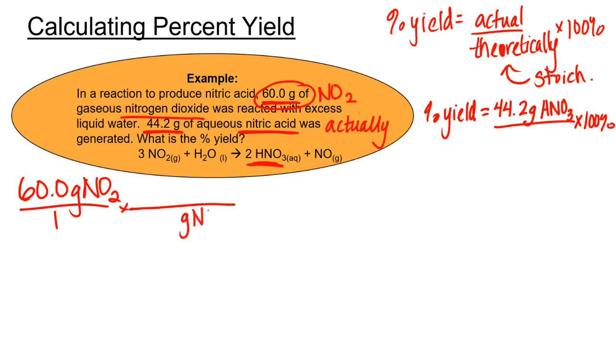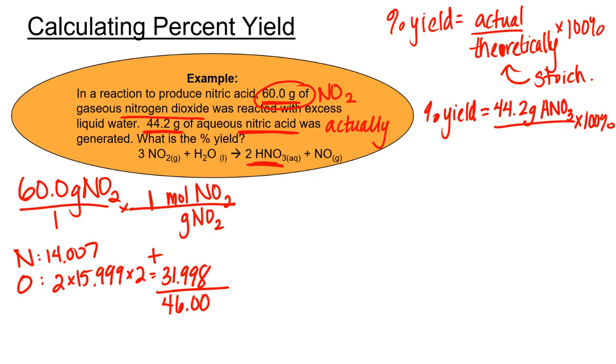We can bring down grams of nitrogen dioxide and first get to moles of NO₂. Now we'll need its molar mass. So we'll need nitrogen and two oxygen. When we add up that 14.007 and 31.998, we get a molar mass of 46.005 grams of NO₂ per mole. So we're going to bring down moles of nitrogen dioxide.